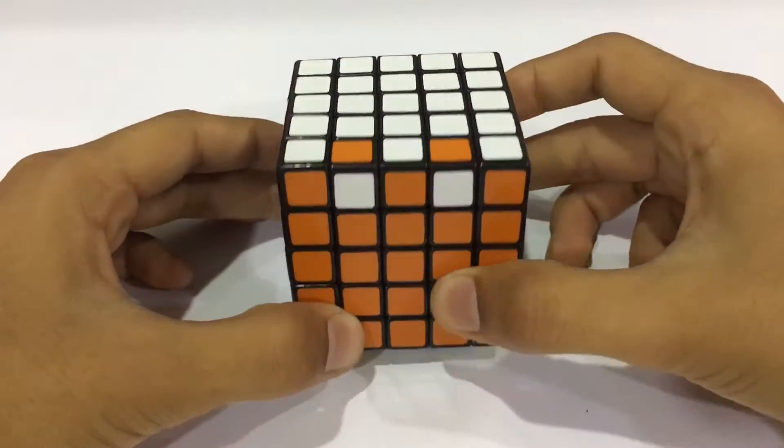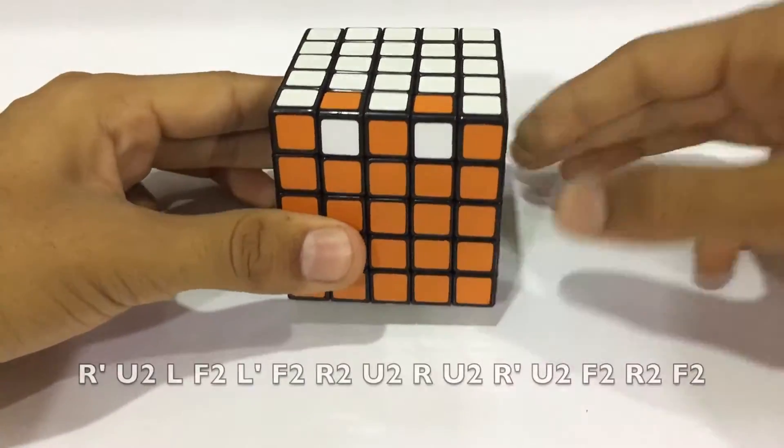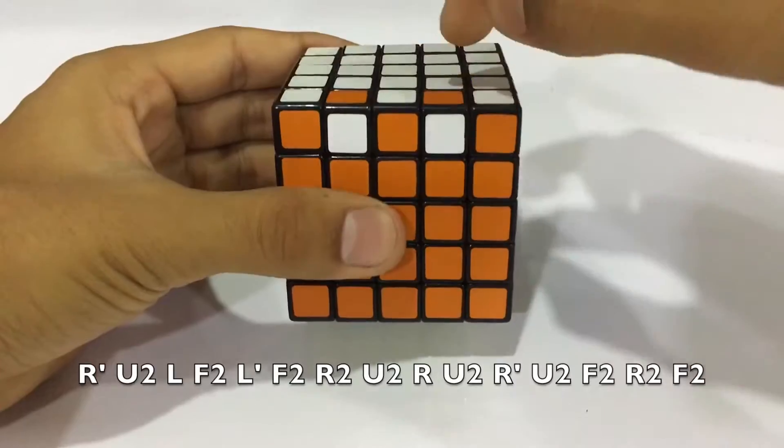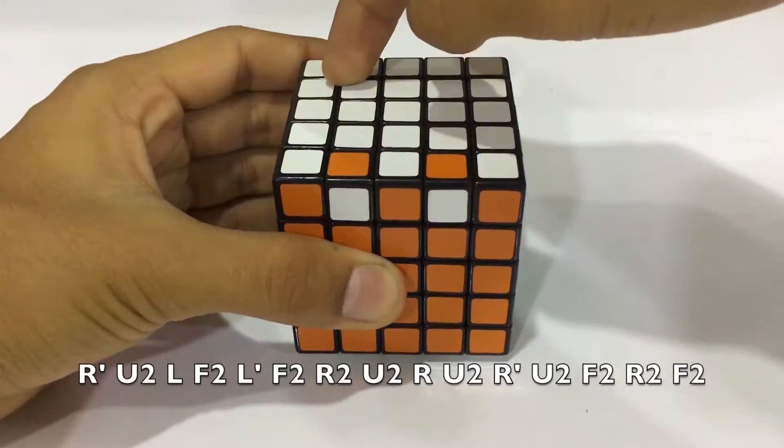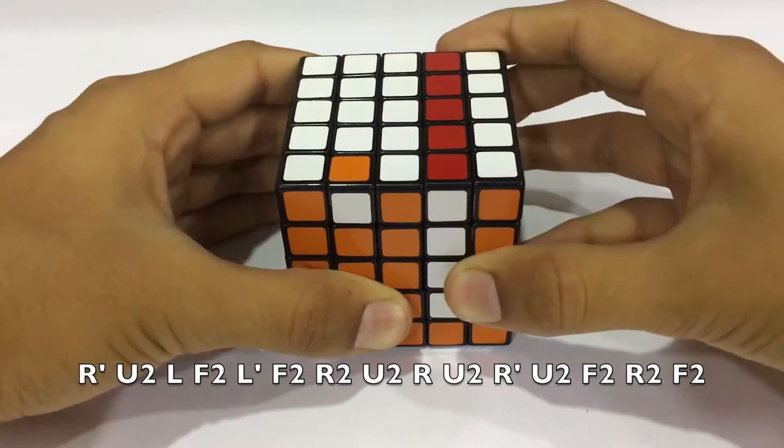So when it comes to the 5x5, you would get an edge parity like this, in which two of the edge pieces are flipped. Use the same algorithm right here, but you use the right layer of this and the left layer in the inner section. So you use the same algorithm.